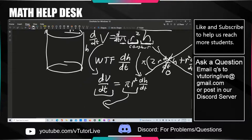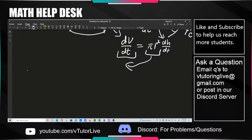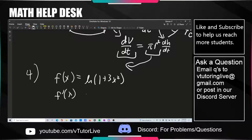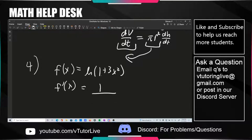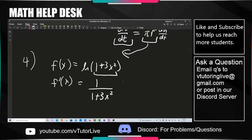Let's go through these derivatives. If f(x) equals ln(1 + 3x²), you take the derivative and ln of the argument turns into 1 over the argument. But chain rule applies — we need to take the derivative of what's inside and multiply it out. The 1 goes away because it's a constant, and this just turns into 6x. So the answer is 6x over (1 + 3x²). That's all.